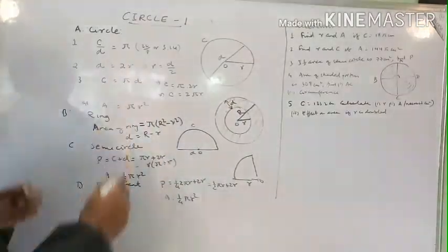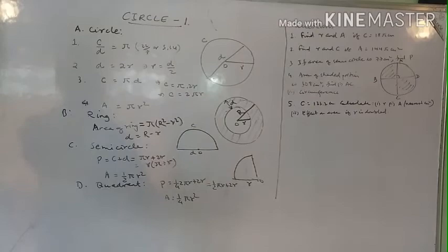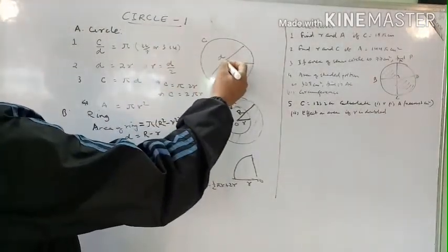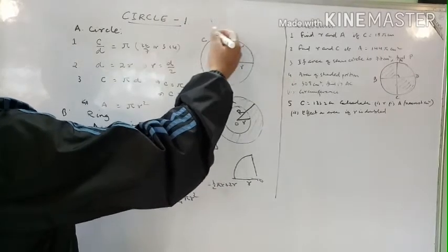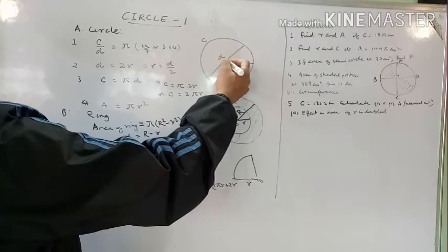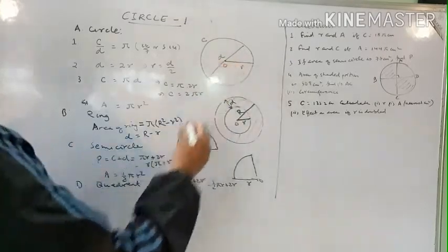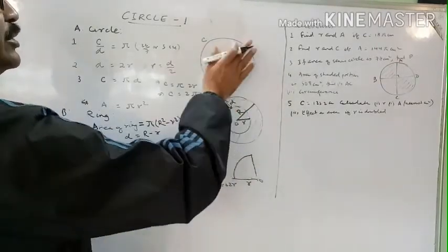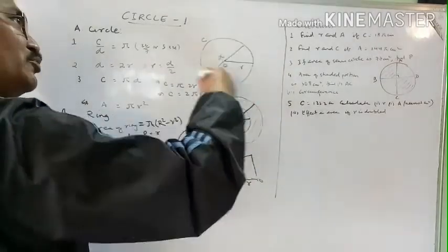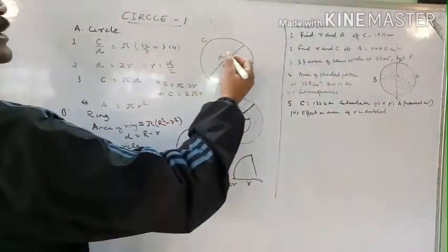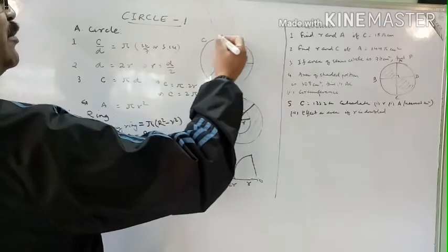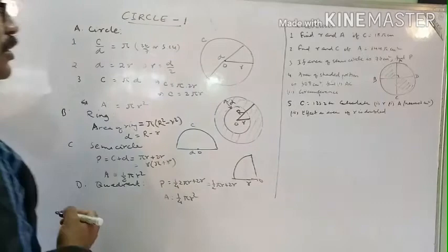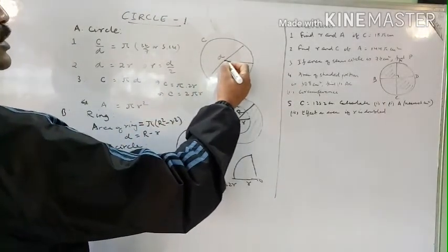We are starting circle today. A circle is a closed figure. It has a center, and the distance of any point on the boundary is called circumference. The area within the circumference is called a circle. The distance from the center to any point on the circumference is always the same.